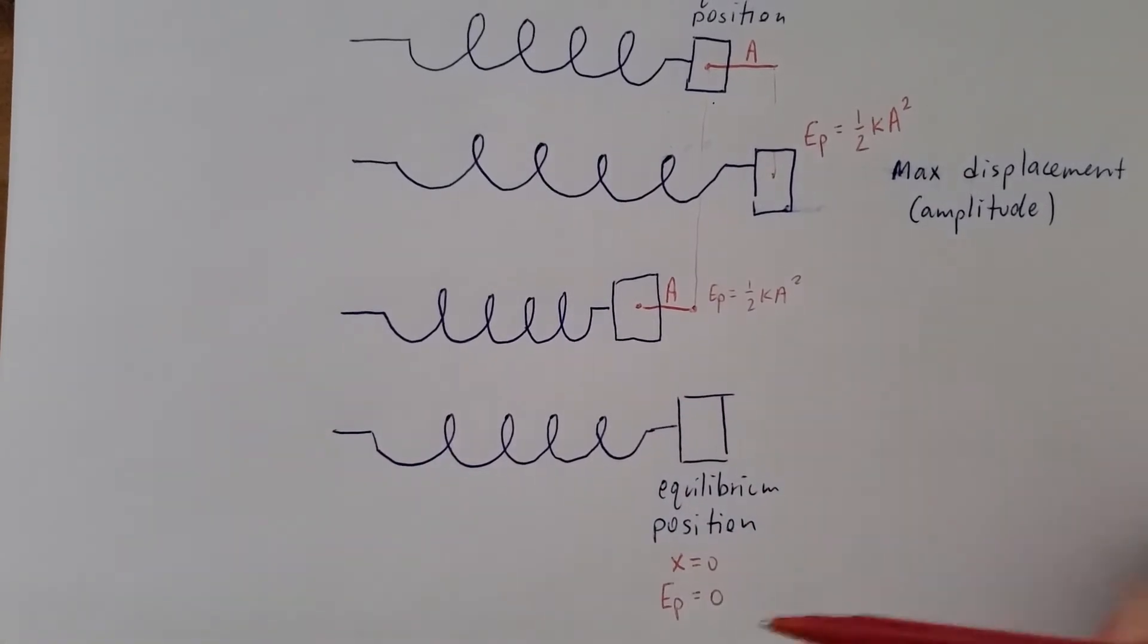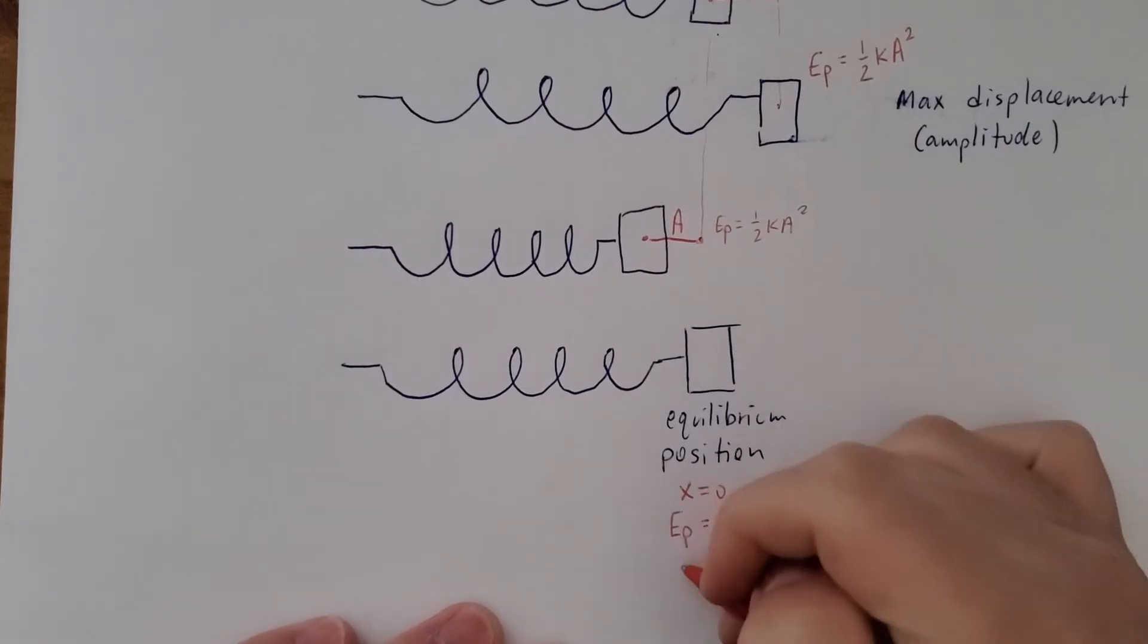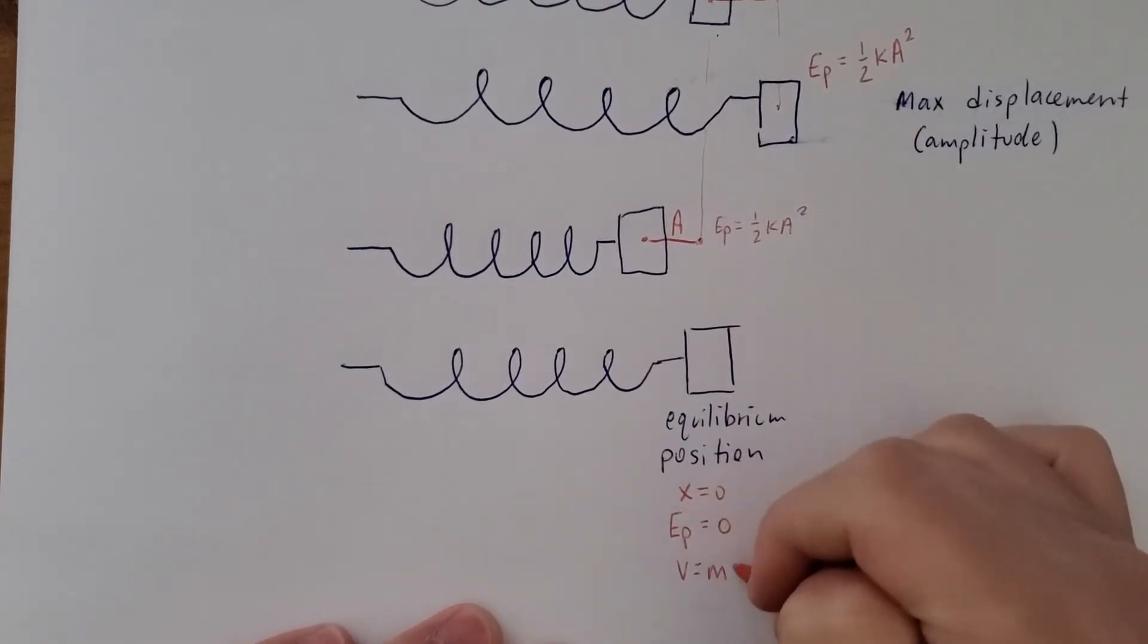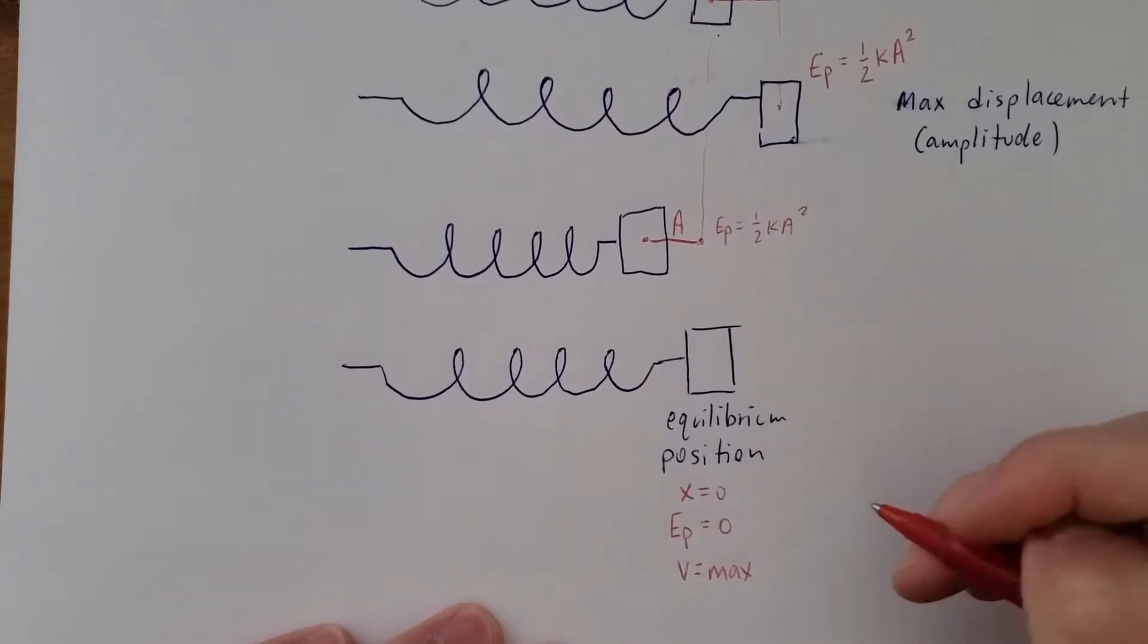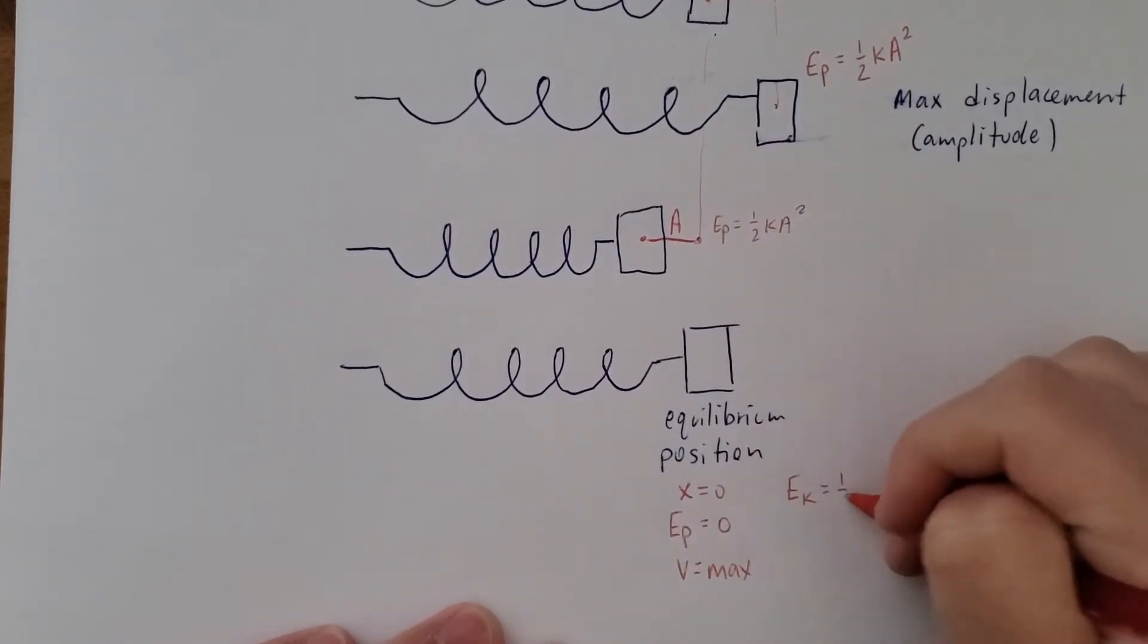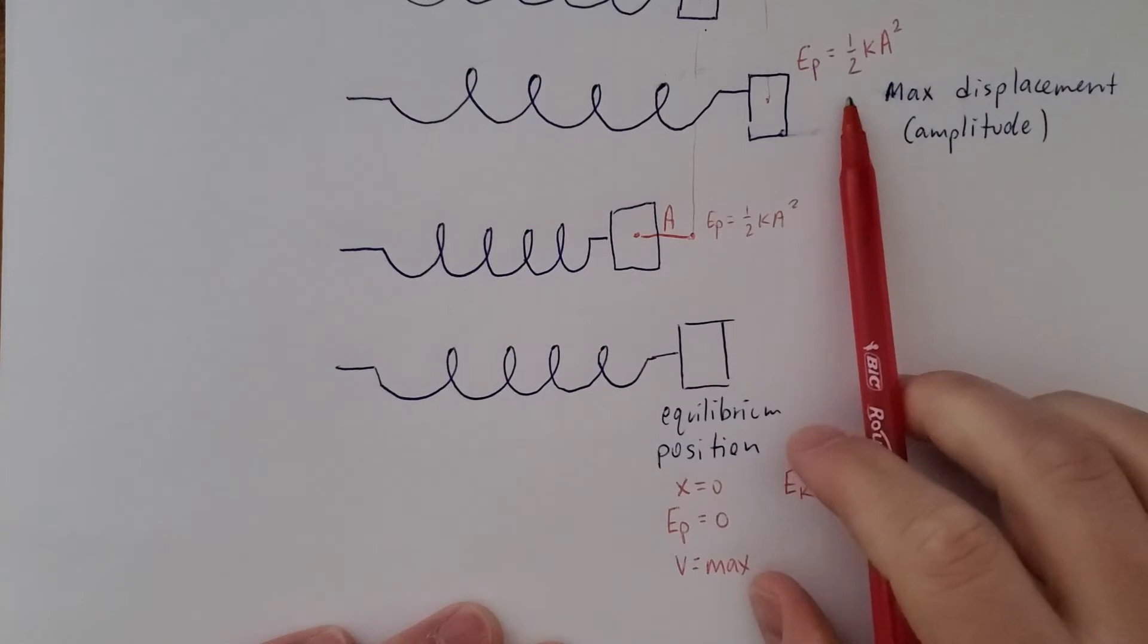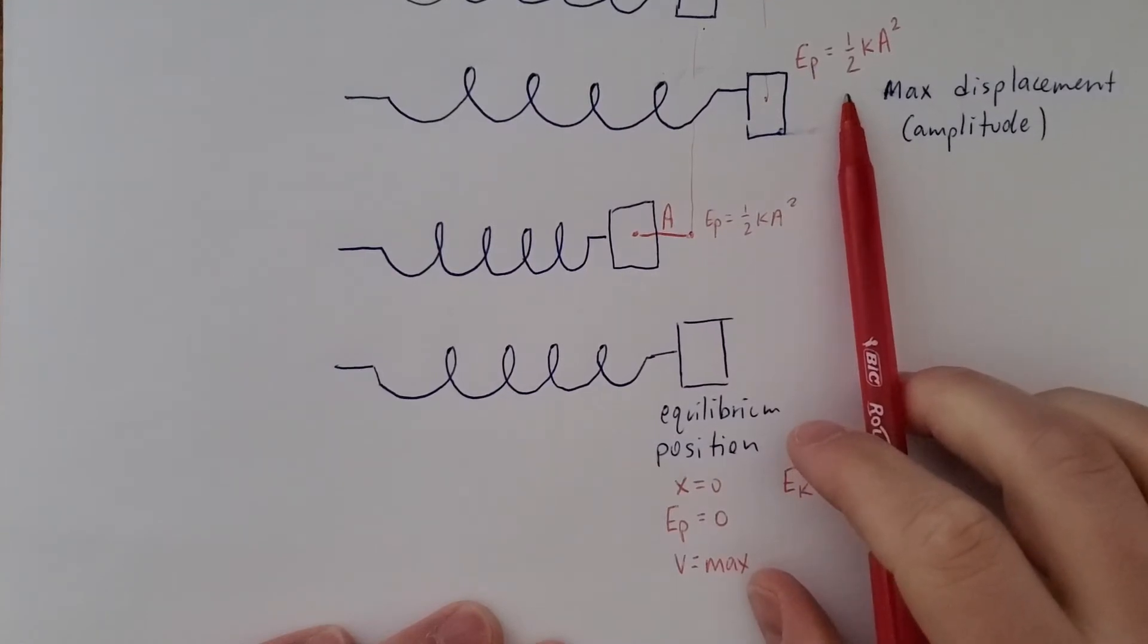One-half kx squared, you'll get zero. That means that all of the energy is going to be kinetic, which corresponds to the maximum speed. All of this energy came from the potential energy that it gained from us stretching it.